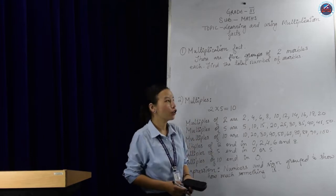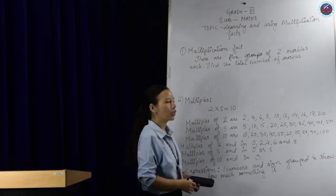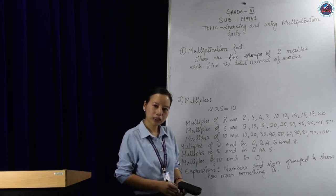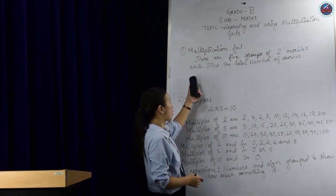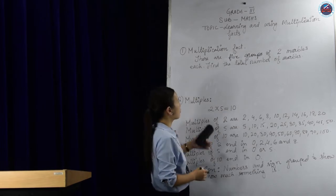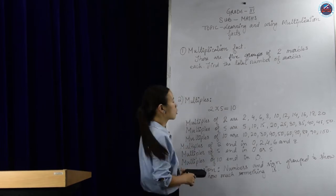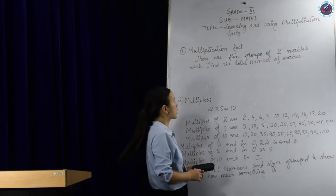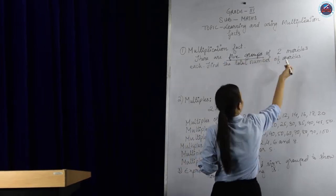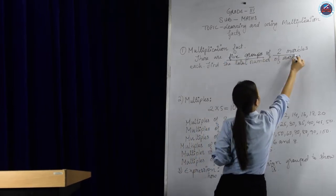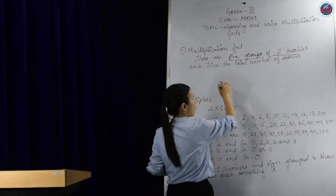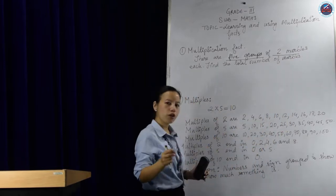We will first go with multiplication. Let us try to understand what multiplication is. Let's try out with this example — the first example. I have written a word problem. It says: there are 5 groups of 2 marbles each. That means there are 5 groups of 2 marbles.